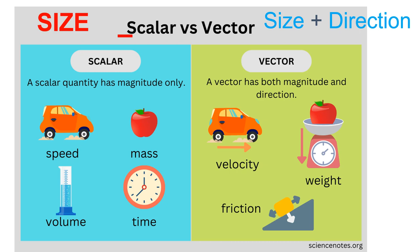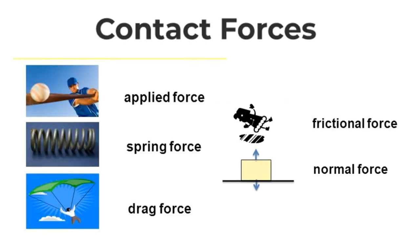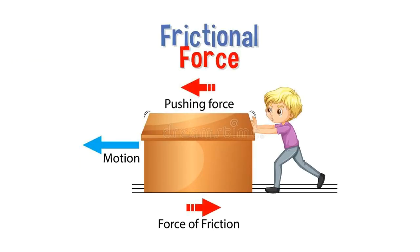You need to know scalar and vector quantities. Scalar quantities have size only — remember 'S for scalar': speed, mass, volume, and time. Vector quantities have size and direction. For example, a car going at 10 miles per hour is scalar; a car going at 10 miles per hour east is vector.